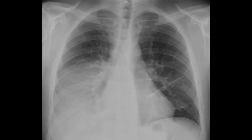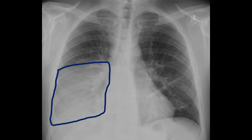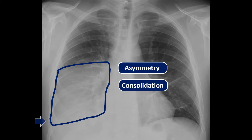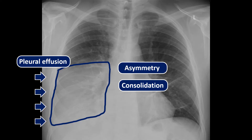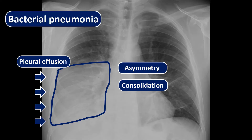Now imagine the same patient with the same story, only we find this on chest x-ray. As opposed to subtle, bilateral, symmetrical infiltrates, you see a marked asymmetry and a thicker, more dense infiltrate, which is a sign of consolidation. There is also pleural effusion. This looks like bacterial pneumonia.